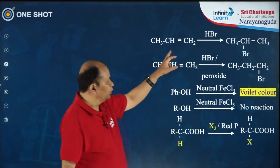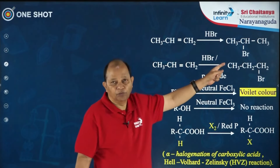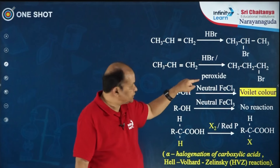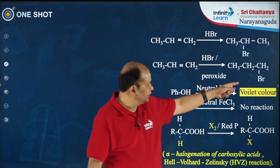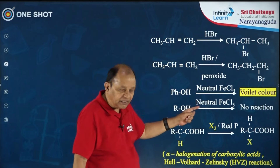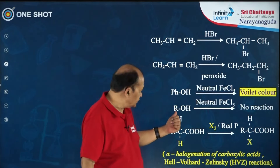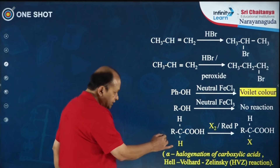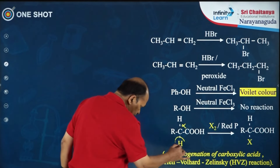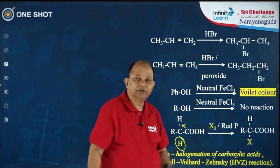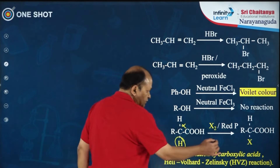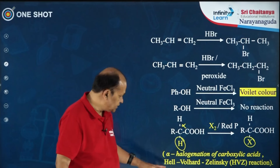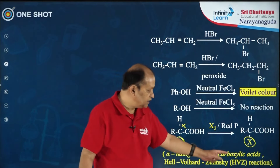Other reactions: propene (an unsymmetrical alkene) reacting with HBr gives 2-bromopropane — the Markovnikov product. Propene reacting with HBr in the presence of peroxide gives the anti-Markovnikov product, 1-bromopropane. Neutral ferric chloride with phenol gives a violet coloration, whereas alcohol does not give the violet color. Alpha-halogenation of carboxylic acids — compounds which contain alpha hydrogen, when treated with halogen in the presence of red phosphorus, the alpha hydrogen is substituted by the halogen. This is called the Hell–Volhard–Zelinsky (HVZ) reaction.